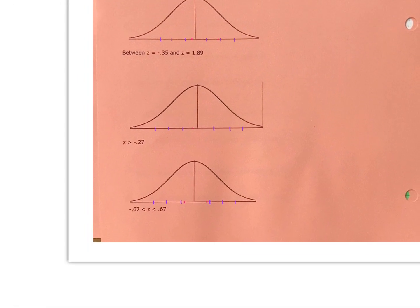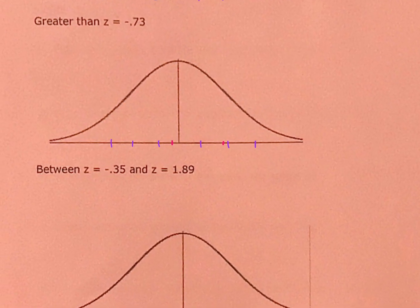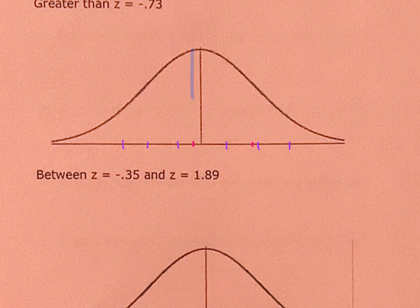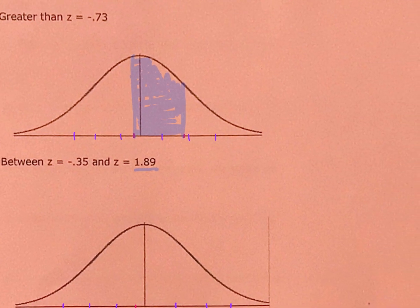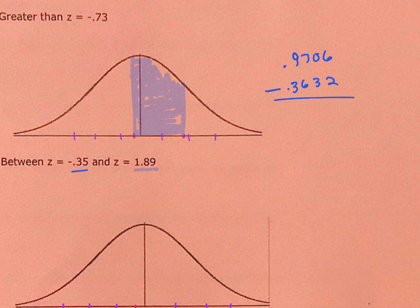The last one is similar to what we've already done: between z equals negative 0.35 and z equals 1.89. Negative 0.35 is about one-third of a standard deviation below the mean, and 1.89 is almost two standard deviations above the mean. We look up z equals 1.89 in the table and get 0.9706, then look up z equals negative 0.35 and get 0.3632. Subtracting: 0.9706 minus 0.3632 gives 0.6074, or 60.74%.